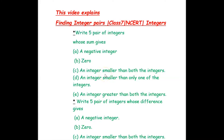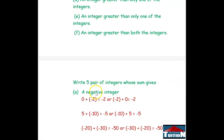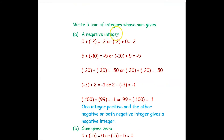Hi, we are from At Home Tuition. In this video we are going to see few examples on how to find the integer pairs based on the given question. The first question is: write five pairs of integers whose sum gives a negative integer.